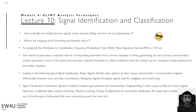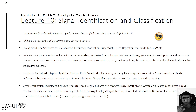The classification process is defined as follows: each electrical parameter is matched with its corresponding parameter from a known database, generating a primary and secondary emitter parameter score. We basically take our intercepted signal and compare it to our known, classified database, and this matching process gives us a score.